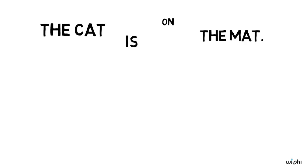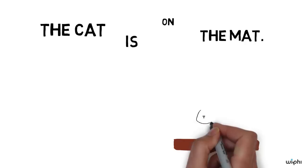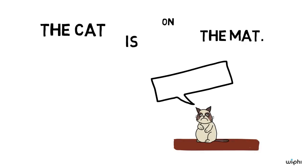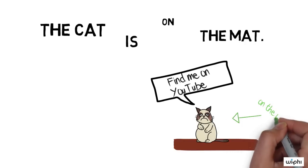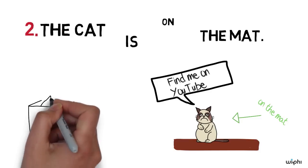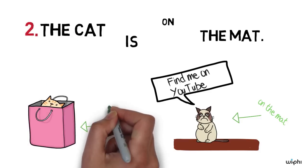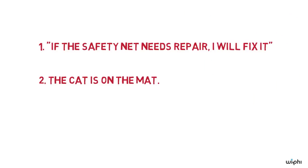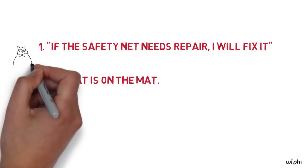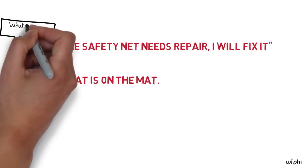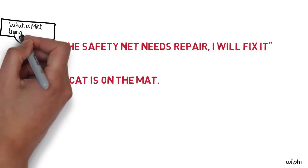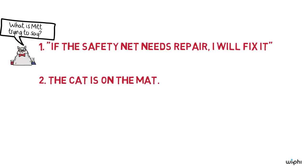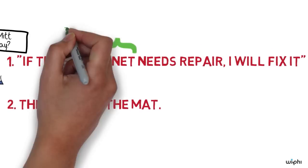Our question today is: what do conditional sentences like this mean? In other words, by uttering this sentence, what has Mitt Romney told us? Here's a way to think about questions of meaning like this. When I say 'the cat is on the mat,' I tell you that the cat is on the mat rather than not on the mat. This is because the meaning of that sentence is that the cat is on the mat. What about our conditional sentence?